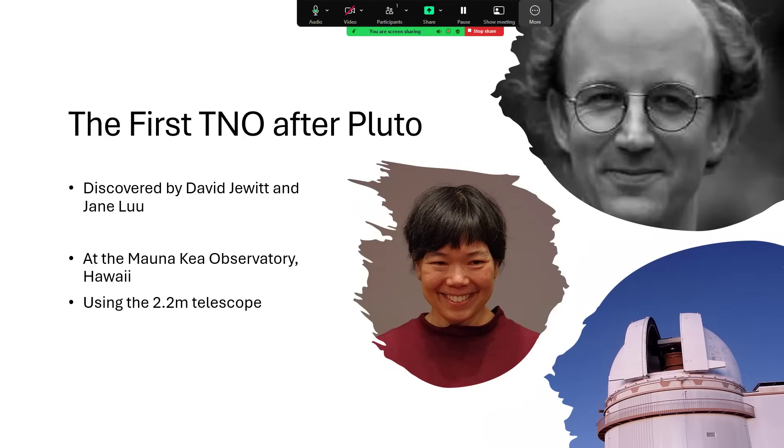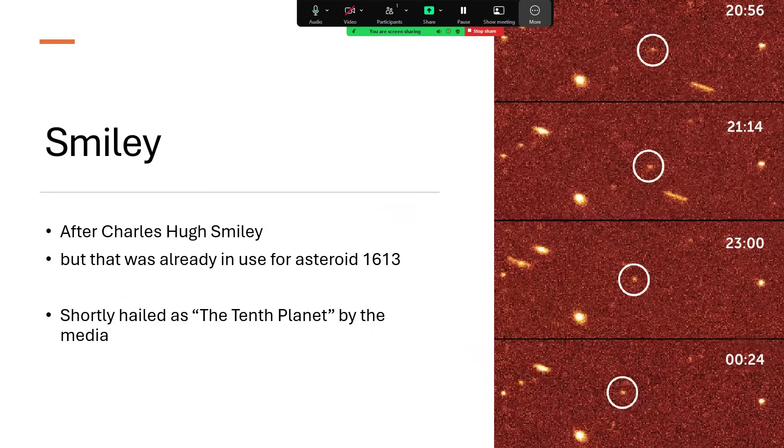David and Jane wanted to call it Smiley, after Charles Hugh Smiley, a famous astronomer and documenter of planets, but that name had already been used for an asteroid belt object, asteroid 1613.